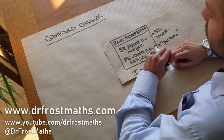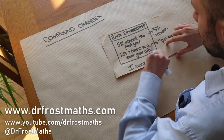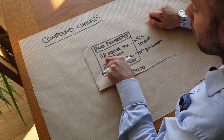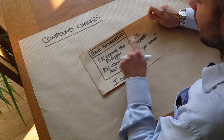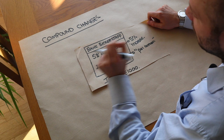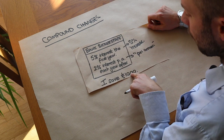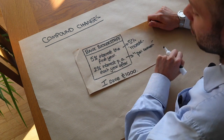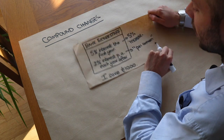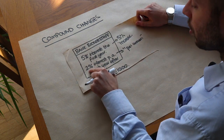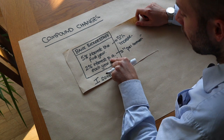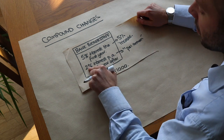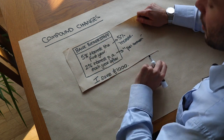Hello and welcome to this video on compound changes. Let's say we had a thousand pounds and we were putting it into Bank Bickerstaff, which offers 5% interest in the first year. Interest means what percentage extra they're giving you each year. It's a 5% increase in year one, and then 2% interest per annum — PA means per annum, Latin for per year — for each year after the first.